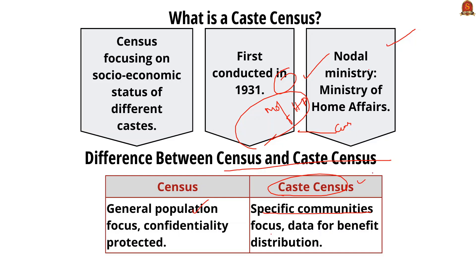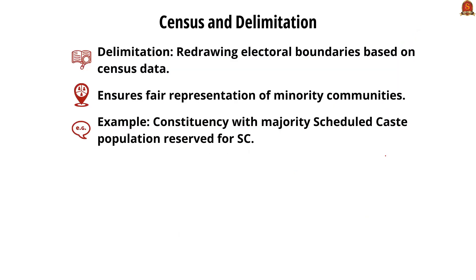One of the primary objectives of the 1881 census was delimitation. Delimitation is the process of rearranging or redrawing the boundaries of electoral constituencies. This is done based on the latest census to ensure fair representation. For example, if a constituency records a majority population of Scheduled Castes, then that constituency will be reserved for Scheduled Castes.